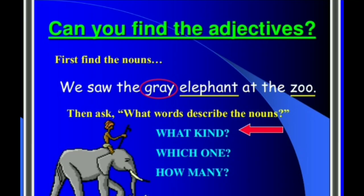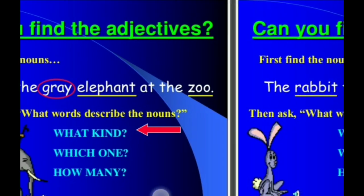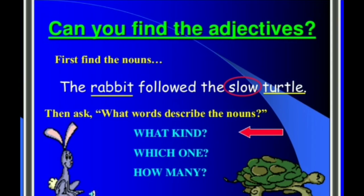Now let us practice — can you find the adjectives? First identify the nouns. 'We saw a grey elephant at the zoo.' The nouns are 'elephant' and 'zoo.' What kind of elephant did you see at the zoo? The answer is 'grey,' so 'grey' becomes the adjective. Next: 'The rabbit followed the slow turtle.' What kind of turtle did the rabbit follow? The answer is 'slow,' so 'slow' becomes the adjective.